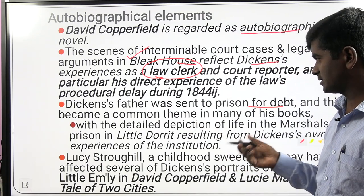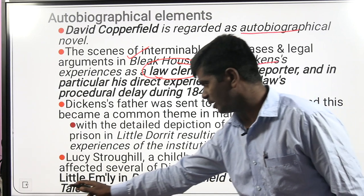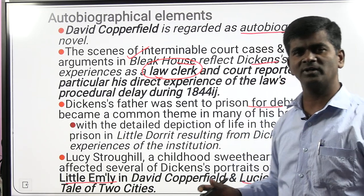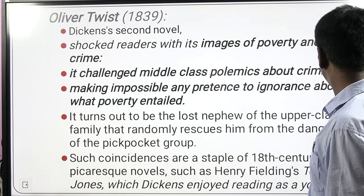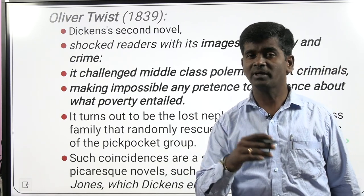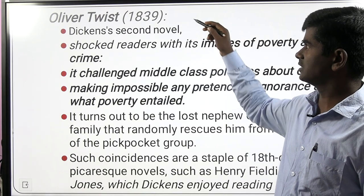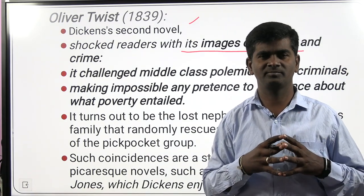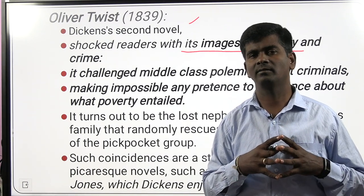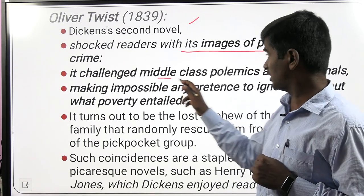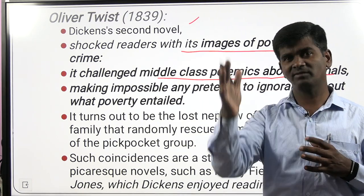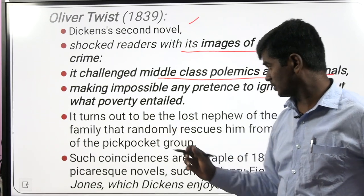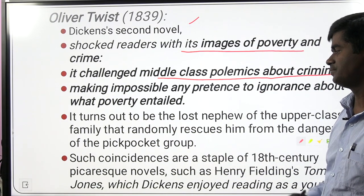Little Emily becomes a part of David Copperfield, and Lucy Manette is a character used with autobiographical elements. Oliver Twist — the second novel — gave readers for the first time a clear picture of poverty and crime in London: child thieves, dacoit robbers. It challenged middle-class polemic about criminals and changed the mindset of people about how criminals arise in society.